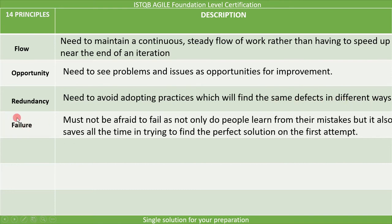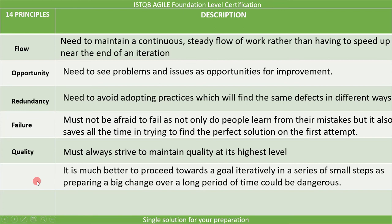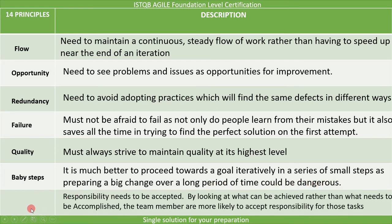The eleventh principle is failure: in a team, one must not be afraid to fail, as not only do people learn from their mistakes, but it also saves time in trying to find the perfect solution on the first attempt. The twelfth is quality: everyone in the team must always strive to maintain quality at its highest level. The thirteenth principle is baby steps: it is much better to proceed towards a goal iteratively in a series of small steps, as preparing a big change over a long period of time could be dangerous. The last principle is accepted responsibility: responsibility needs to be accepted by looking at what can be achieved rather than what needs to be accomplished, making team members more likely to accept responsibility for those tasks.